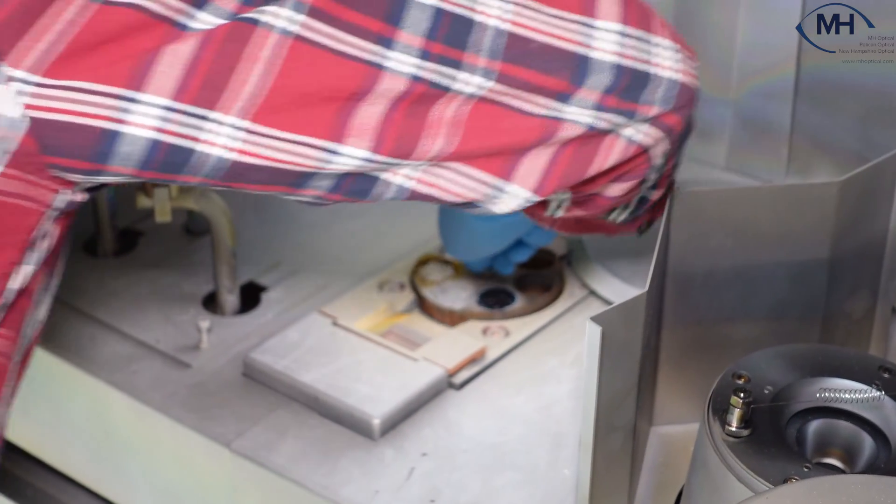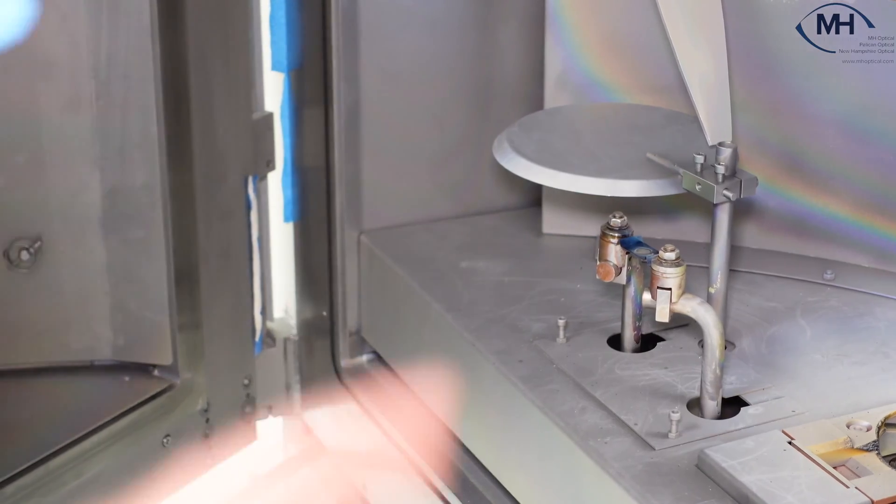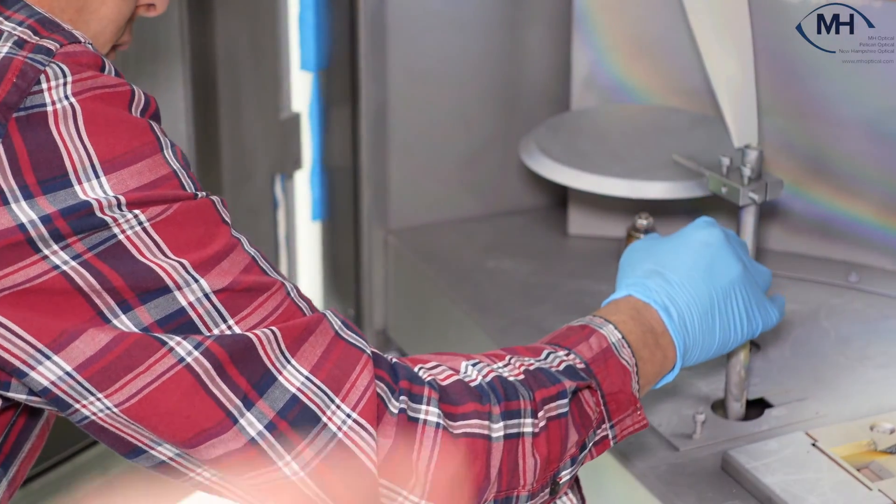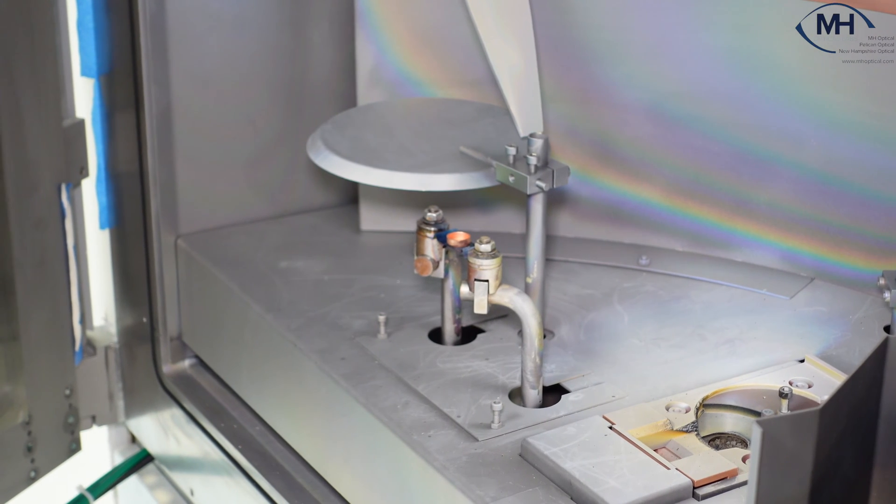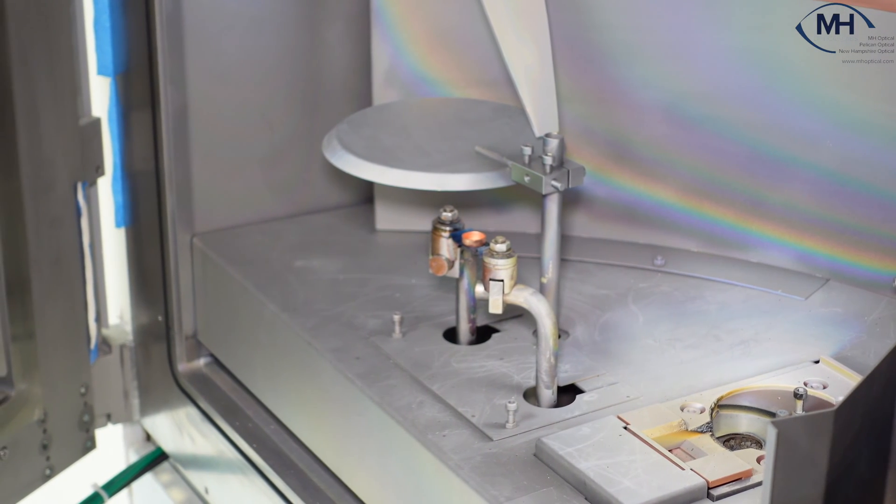Now we're going to load the crucible into the machine. Next up we're going to load the hydro into the machine. Now the hydro goes on the thermal evaporator, not into the crucible like I mentioned before. Once the hydro is set up in the machine, we're ready to load the lenses into the chamber.